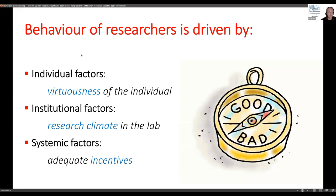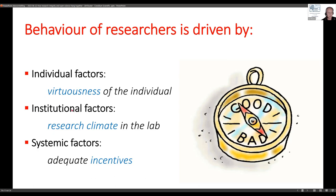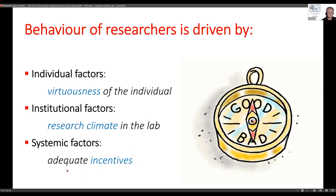Now I move on to what drives all these behaviors that have a good or bad influence on research integrity. I believe there are three categories: individual factors, institutional factors, and systemic factors. The virtuousness of the individual is important, but researchers are not working in splendid isolation — we work in social environments. The research climate in the lab or research group is really important, as are incentives. It's nice when they're adequate and problematic when they're perverse.